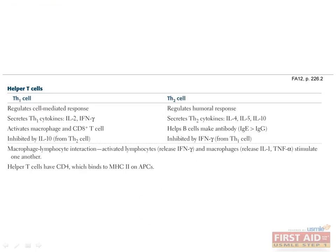CD4-positive T cells have the fate of becoming either T helper 1 or T helper 2 cells. Th1 cells are responsible for regulating the cell-mediated response to infection. Through the secretion of IL-2 and interferon gamma, Th1 cells activate macrophages and CD8 cells. Th2 cells regulate the humoral response and are helpful to B cells. Secretion of IL-4 and IL-5 stimulates B cells to make antibody. Th2 cells also produce IL-10, which has counter-regulatory effects on Th1 cells. Likewise, interferon gamma from Th1 cells inhibits the action of Th2 cells.